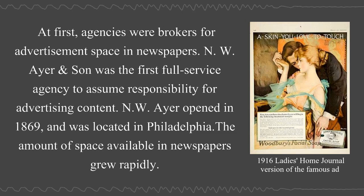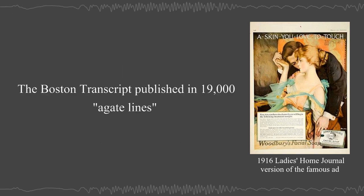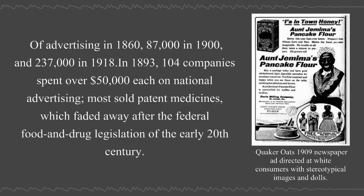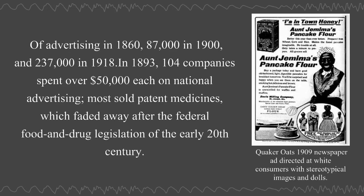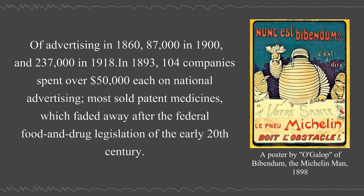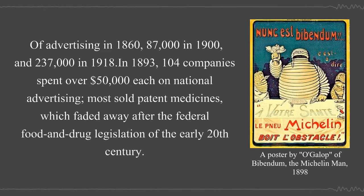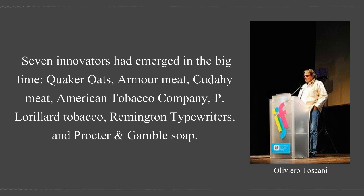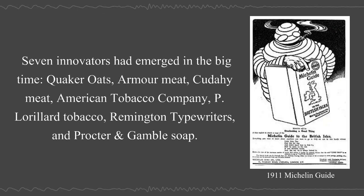The amount of space available in newspapers grew rapidly. The Boston Transcript published 19,000 lines of advertising in 1860, 87,000 in 1900, and 237,000 in 1918. In 1893, 104 companies spent over $50,000 each on national advertising. Most sold patent medicines, which faded away after the federal food and drug legislation of the early 20th century. Seven innovators had emerged in the big time: Quaker Oats, Armor Meat, Cudahy Meat, American Tobacco Company, P. Lorillard Tobacco, Remington Typewriters, and Procter & Gamble Soap.